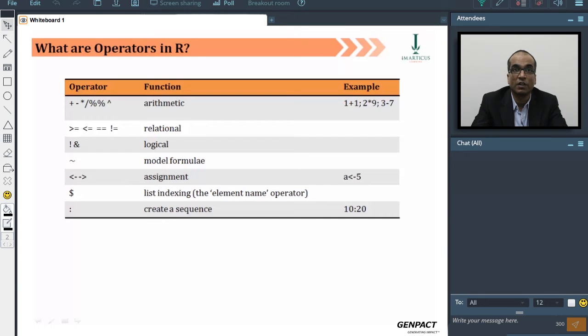From the relational perspective, it would be the greater than, equal to, less than, equal to, double equal to, and not equal to is shown with an exclamation and equal to mark. So you cannot use something like what you use in SQL statement, like the less than and the greater than sign as not equal to. That won't work in R.